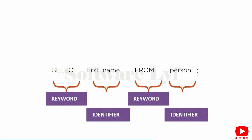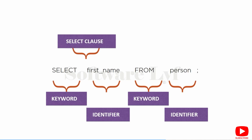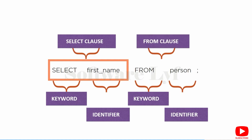SELECT and FROM are part of the SQL specification. first_name and person refer to things inside my database. We can also break this down into clauses. SELECT first_name is what we refer to as a select clause. Every SQL statement can be broken down into individual tokens — keywords and identifiers — and also individual clauses. The select clause tells the database what it is that we want. The from clause tells the database where we want the data expressed in the select clause. The select clause and from clause go together to say: give me the column first_name from the table named person.